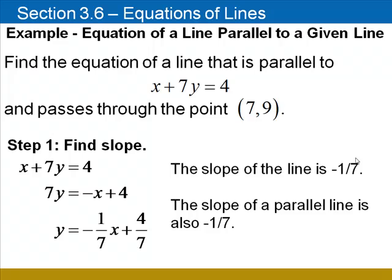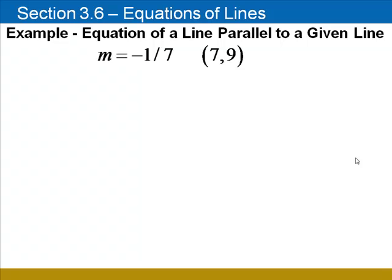Now we'll talk about how to find the equation of a line if we know the slope is negative 1/7 and it passes through the point (7, 9). Substitute into the point slope form. We're going to substitute 9 for y1, the y coordinate, negative 1/7 for m, the slope, and 7 for x1, the x coordinate.